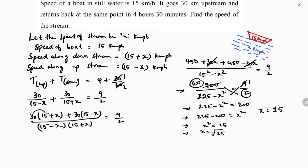So x equals plus or minus 5. But speed cannot be negative, so x equals 5. Therefore the speed of the stream is 5 km per hour.